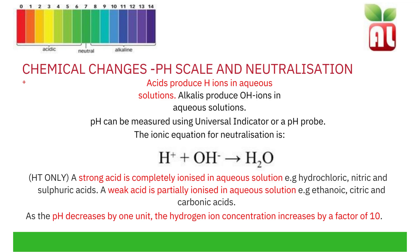As the pH decreases by one unit — for example going from pH 2 to pH 1 — you have made your acid stronger, and the hydrogen ion concentration increases by a factor of 10. For example, a pH of 1 gives a hydrogen ion concentration of 0.1 mol/dm³. As you increase this pH to pH 2, making it a weaker acid, the hydrogen ion concentration decreases to 0.01 mol/dm³. You have decreased your hydrogen ion concentration by a factor of 10 as you increase the pH from 1 to 2.